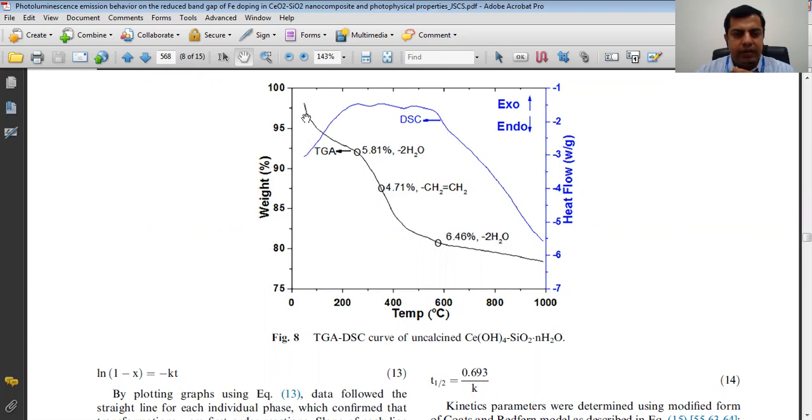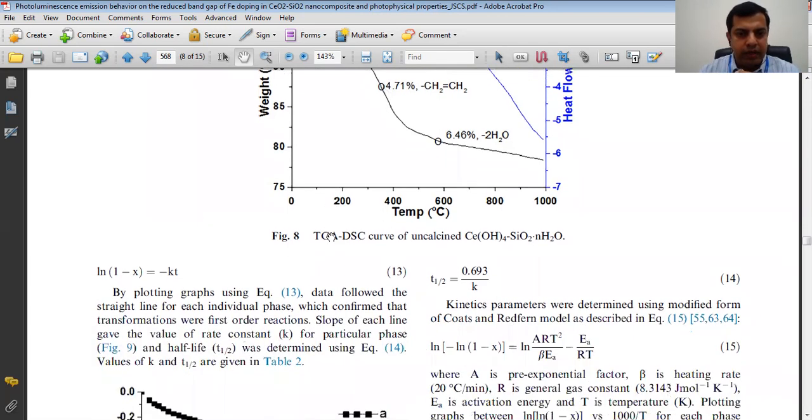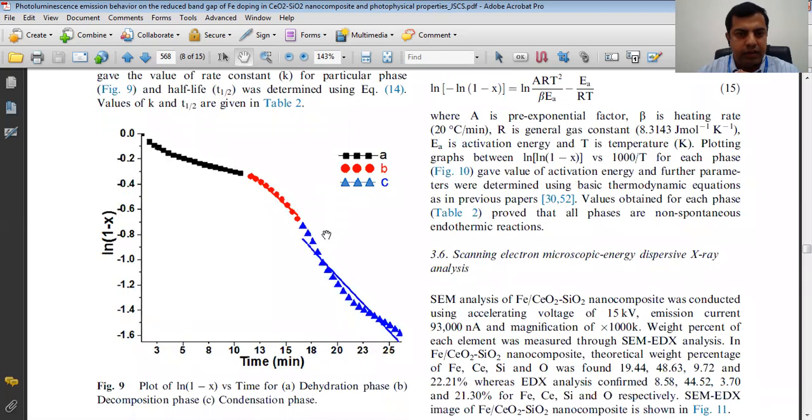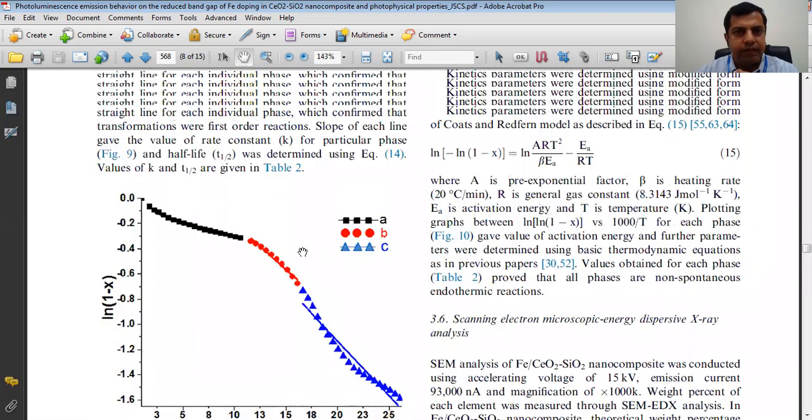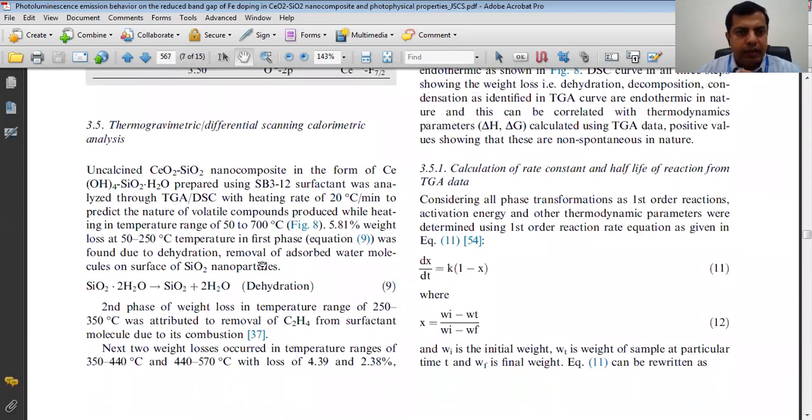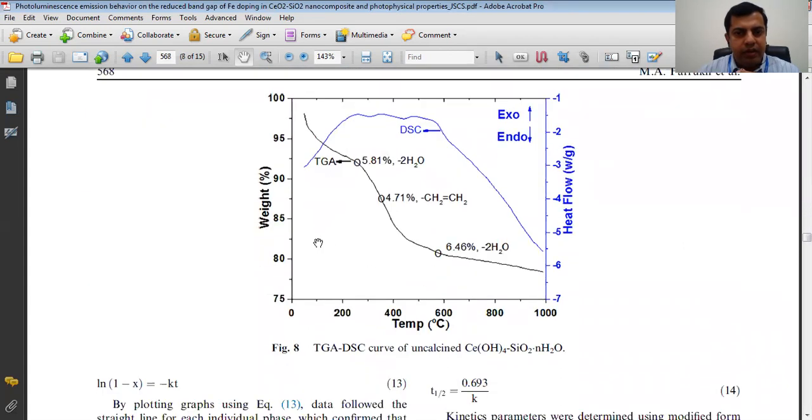There are three weight losses. The first weight loss is 50 to 250 degrees centigrade and having a weight loss of 5.81%. Let's start the characterization of this material by using TGA. This is going to confirm the removal of two water molecules and this you can easily calculate.